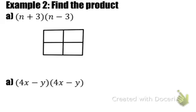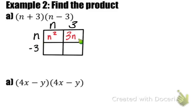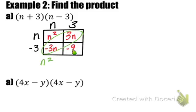We create our box and write our terms. We're going to have n plus 3 written along the top — so we have n and a positive 3 — and then n minus 3 written along the left side. We multiply out n and n to get n squared, 3 times n to get 3n, n times negative 3 to get negative 3n, and then 3 times negative 3 to get negative 9. We write out our products along the bottom: n squared, and combining our like terms, negative 3n plus 3n cancels out to zero, so we don't write that in our final answer. We are left with minus 9.